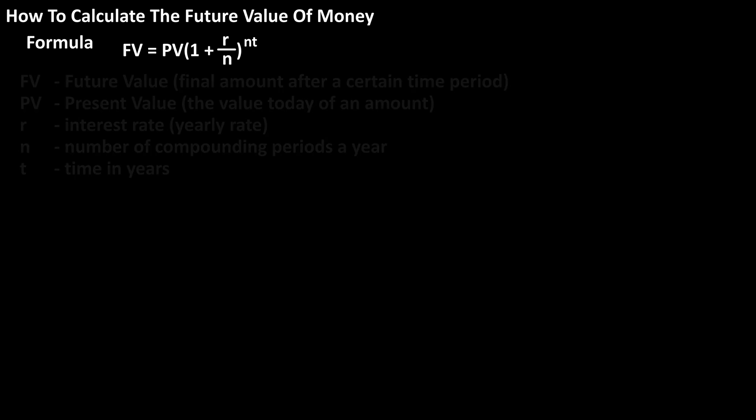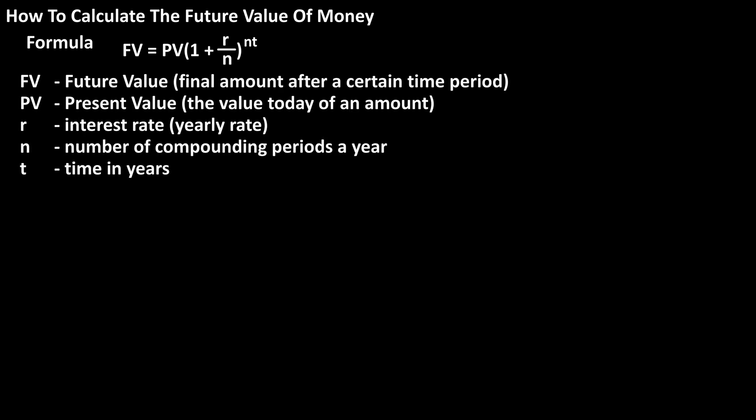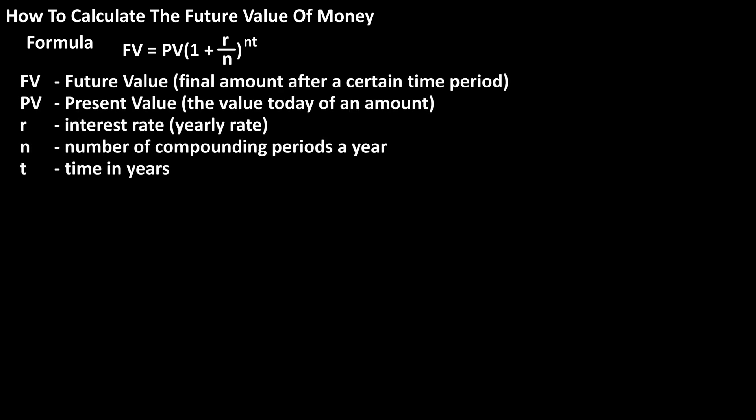In this formula, present value represents the value today of an amount, r represents the yearly interest rate, n represents the number of compounding periods per year, and t represents the time in years.